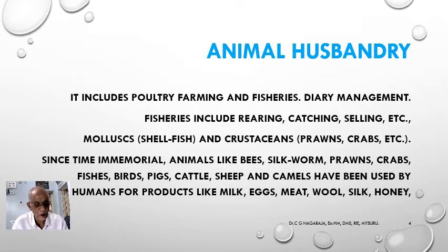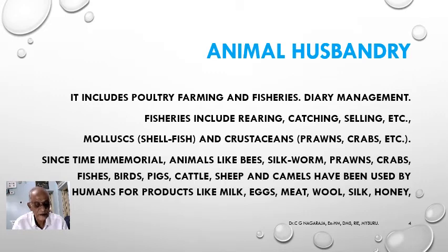Since time immemorial, animals like bees, silkworms, prawns, crabs, fishes, birds, pigs, cattle, sheep, and camels have been used by humans for various activities, including the production of milk, eggs, meat, wool, silk, honey, and delicacies like prawns and crabs. So animal husbandry takes care of all these important forms of food materials for human beings.